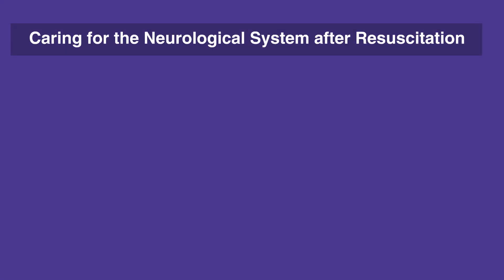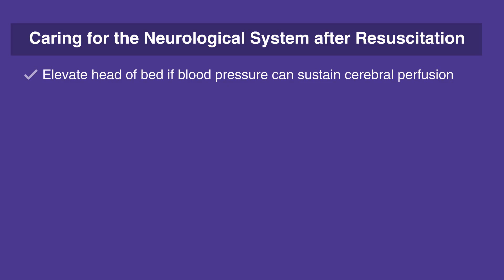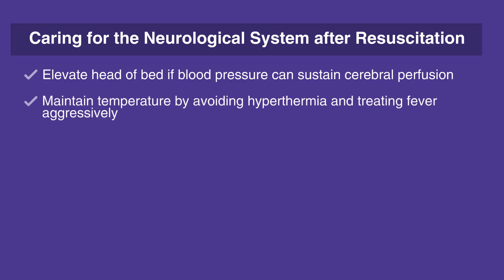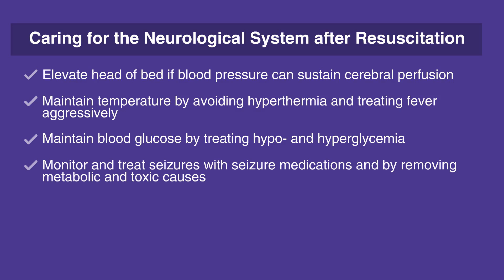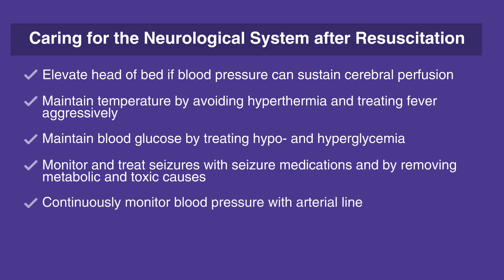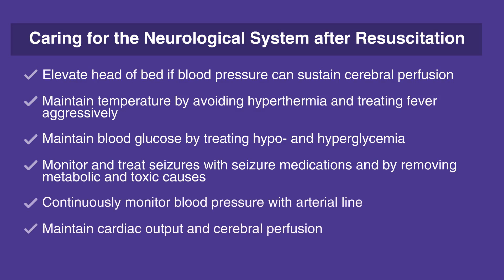When caring for the neurological system after resuscitation, follow this checklist. Elevate head of bed if blood pressure can sustain cerebral perfusion. Maintain temperature by avoiding hyperthermia and treating fever aggressively. Do not re-warm hypothermic cardiac arrest individuals unless hypothermia is interfering with cardiovascular function, and treat hypothermia complications as they arise. Maintain blood glucose by treating hypo- and hyperglycemia. Hypoglycemia is defined as less than or equal to 60 mg per deciliter. Monitor and treat seizures with seizure medications and by removing metabolic and toxic causes. Continuously monitor blood pressure with arterial line. Maintain cardiac output and cerebral perfusion.